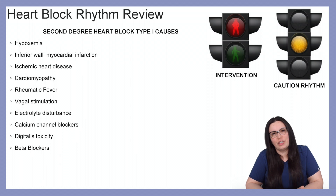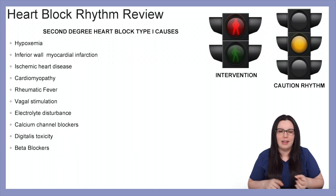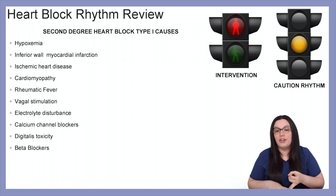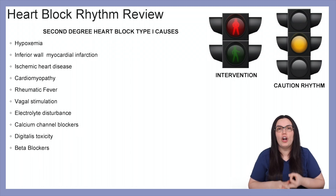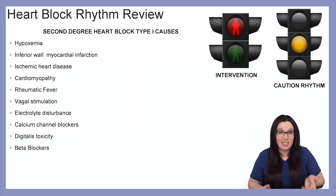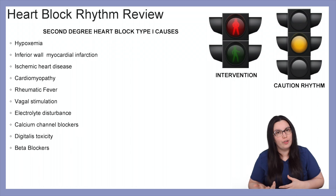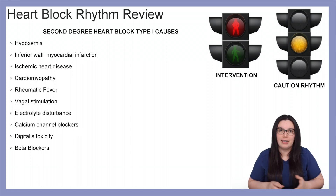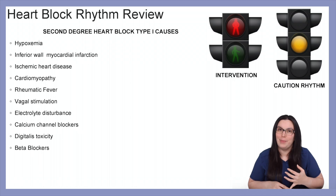Causes of second degree type 1 include hypoxemia, inferior wall myocardial infarction, ischemic heart disease, cardiomyopathy, rheumatic fever, vagal stimulation is a big one, electrolyte disturbances, calcium channel blockers, as well as digitalis toxicity and beta blockers.